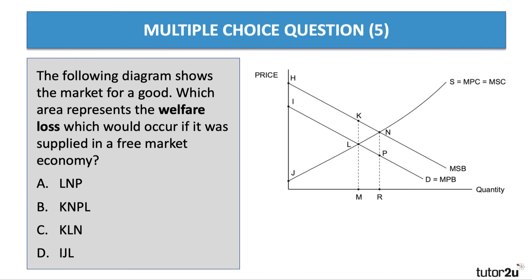And finally, here's question number five. The following diagram shows the market for a good. Which area represents the social welfare loss which would occur if it were supplied in a free market economy? Take a moment to have a look at question five. Here we've got positive externalities from consumption. The free market output is M. The social optimum level of output is R, which takes into account the external benefits of NP. The welfare loss is a triangle — but which triangle? The welfare loss is KLN, in the sense that from M to R, the social benefit is greater than the social cost. Therefore, we're losing some social welfare.